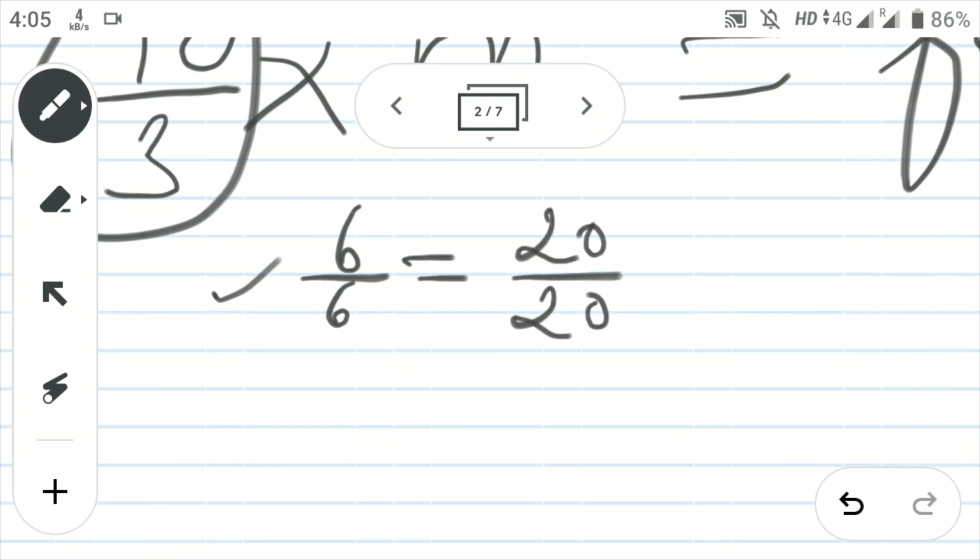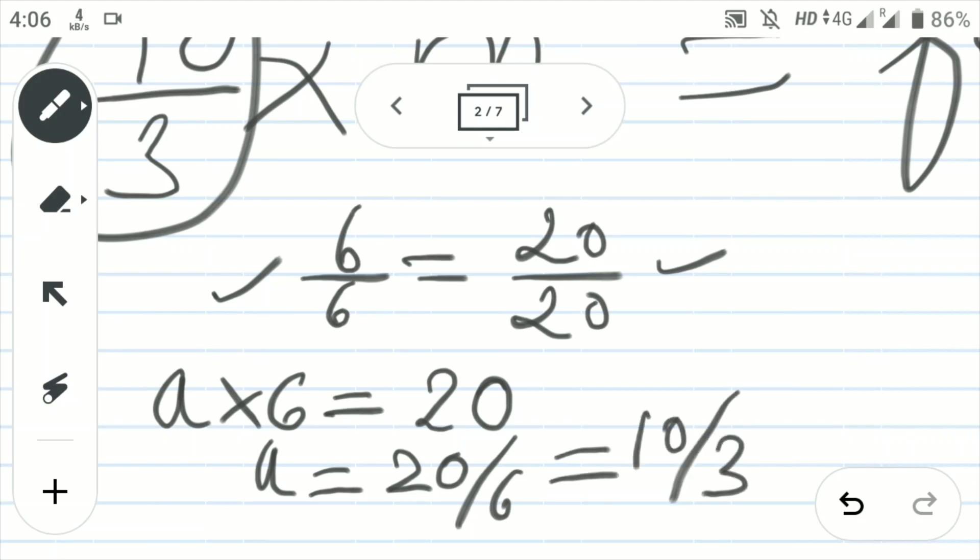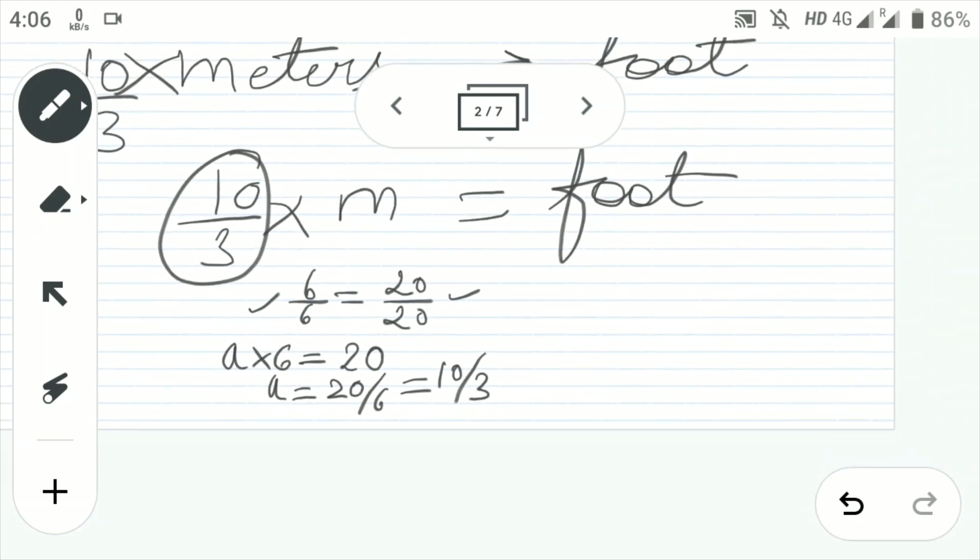So for this, we know that 6 by 6 is equal to 20 by 20 foot. So we can conclude that 6 is equal to 20. But since both are of different units, we can assume that we have multiplied some number, let's assume that to be a. So we have multiplied a with 6 to get 20. So when you calculate a's value, you will get 20 by 6 which when you solve, the answer is 10 by 3. So when 6 meter is multiplied by 10 by 3, the answer is 20 foot. So just use the same rule to convert it into foot.